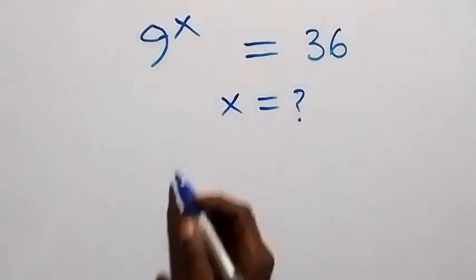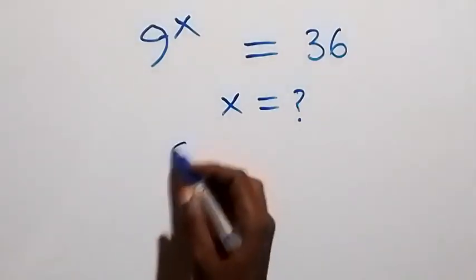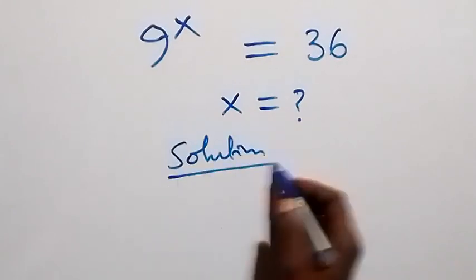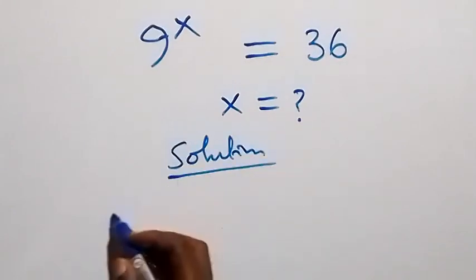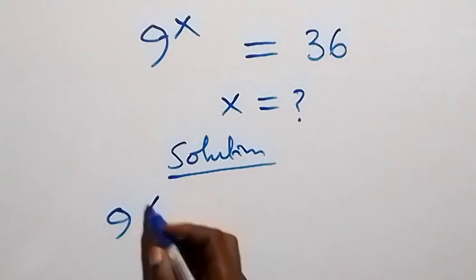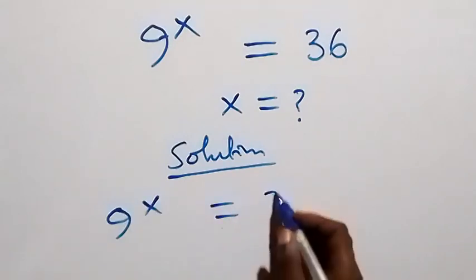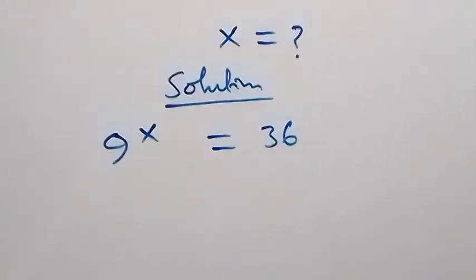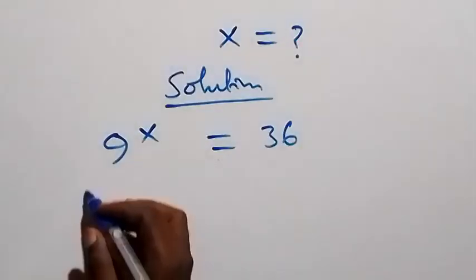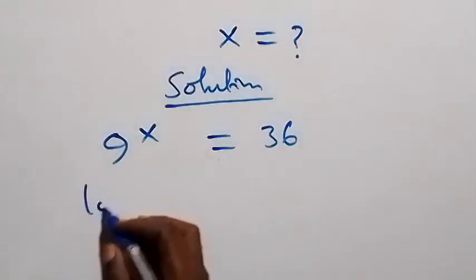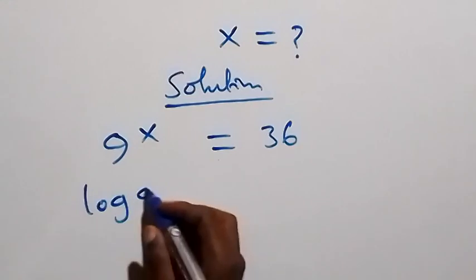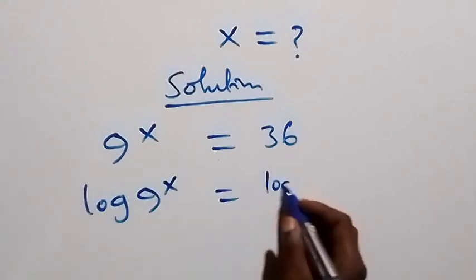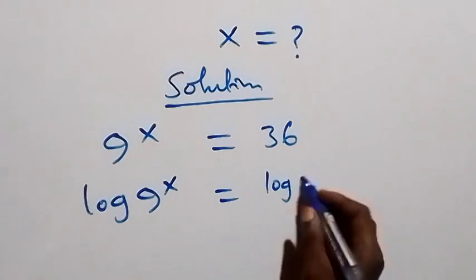Hello, you are welcome. How to solve this nice exponential equation. We are given 9 raised to power x equals to 36. Then here let's take the log on both sides — that is, we have log of 9 raised to power x equals to log 36.